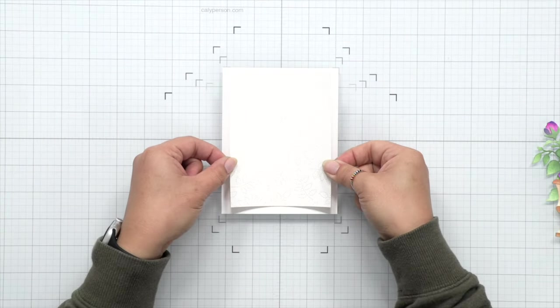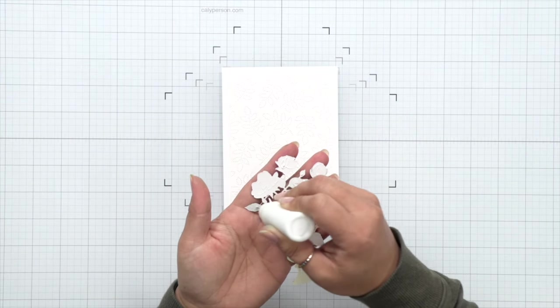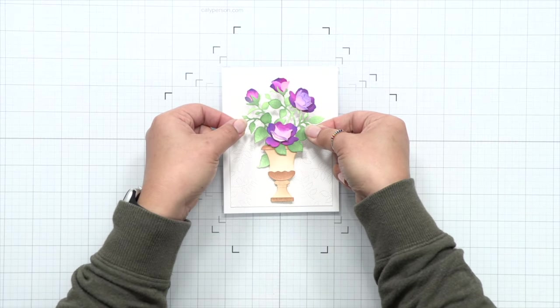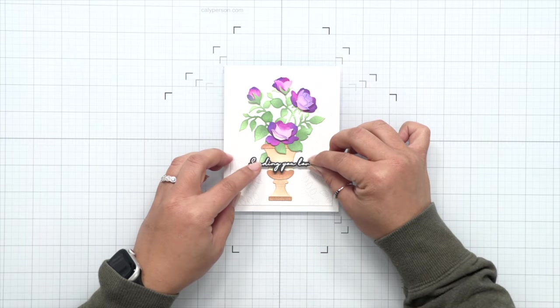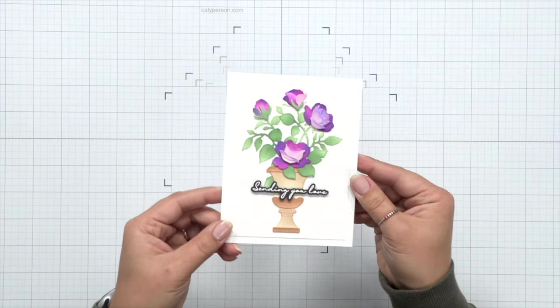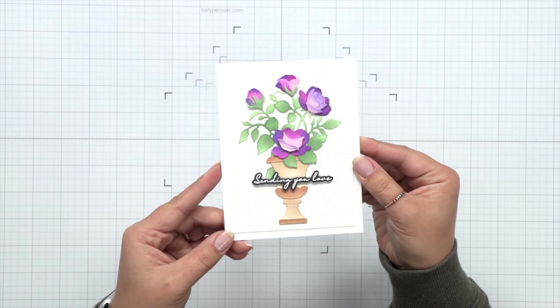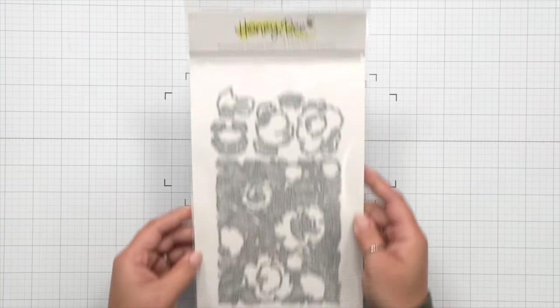Now for the background, I wanted some texture. So I did bring in the spring leaves A2 cover plate from a previous release. I trimmed off the sides to mat a card base and then I've attached my planter. And now to finish with a sentiment, I used one of the sentiments from the By Your Side sentiment stamp and die set. So that finishes my second card. It's more simple, but it's got lots of dimension and layers of color.